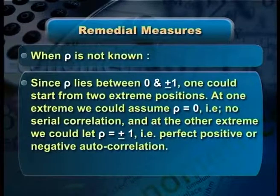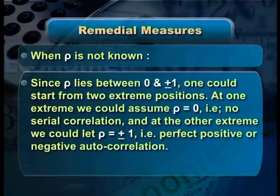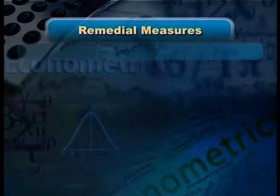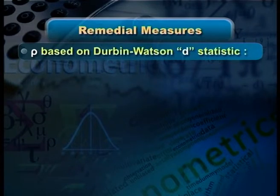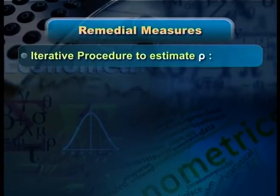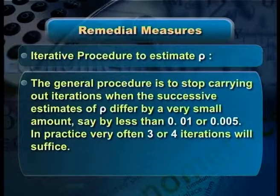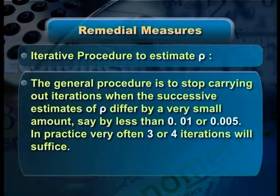When ρ is not known, its value lies between 0 and ±1. If ρ = 0, there is no serial correlation; if ρ = +1, there is perfect positive autocorrelation; if ρ = −1, there is perfect negative autocorrelation. Another remedial measure uses ρ estimated from the Durbin-Watson d-statistic. Another is the iterative procedure — the Cochrane-Orcutt method — which uses estimated residuals et to obtain information about the unknown ρ. Iterations continue until successive estimates of ρ differ by a very small amount, say less than 0.01 or 0.005. In practice, 3 or 4 iterations usually suffice.